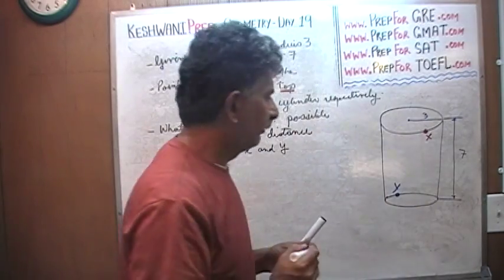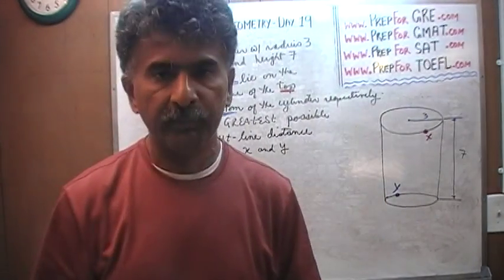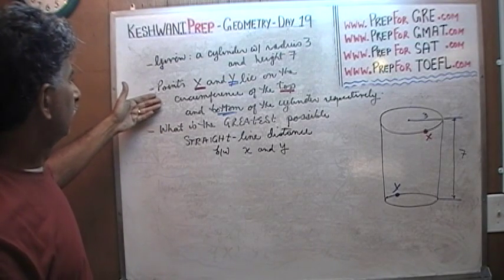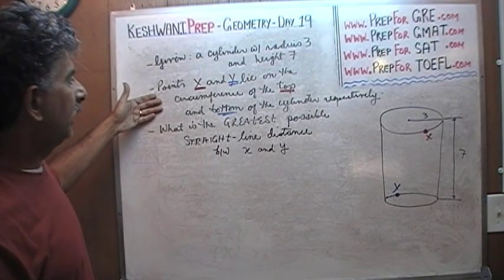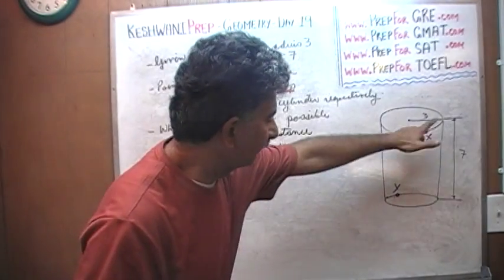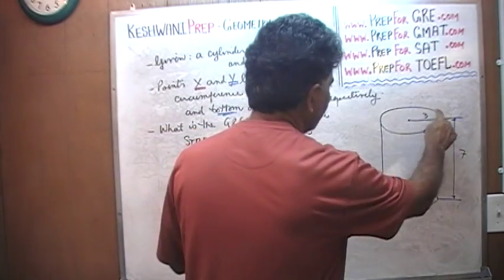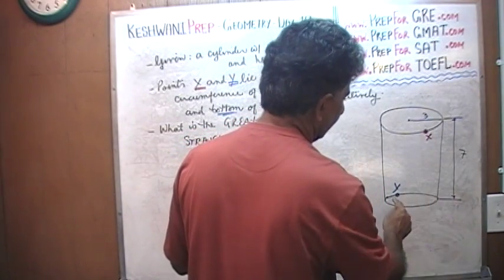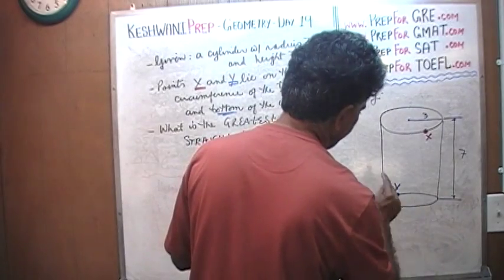It makes absolutely no difference where I put X and Y because that's exactly what we are told. Points X and Y lie on the circumference of the top and bottom of the cylinder just like we showed here. X lies on the top circumference and somewhere on the top circumference lies the X, and on the bottom circumference somewhere lies the Y.